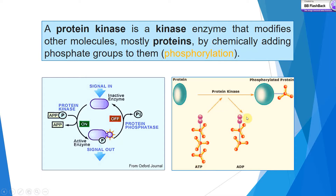During this process, ATP is converted to ADP — adenosine triphosphate to adenosine diphosphate. This signaling regulates signal in and signal out, on and off. When protein phosphatase enzyme is present, one free phosphate group is removed and the enzyme becomes inactive again.